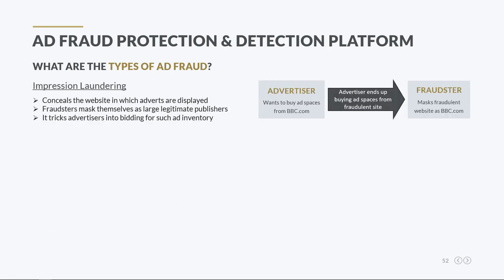Impression laundering is the practice of concealing the real website where the actual ads are displayed. Domain spoofers mask themselves as large legitimate and trustworthy publishers to monetize ad impressions that advertisers otherwise wouldn't buy. In the programmatic advertising ecosystem, publishers are allowed to label their own websites. Fraudsters may identify themselves as BBC.com or any other large publisher, and hence advertisers can be tricked into bidding for such ad placements.